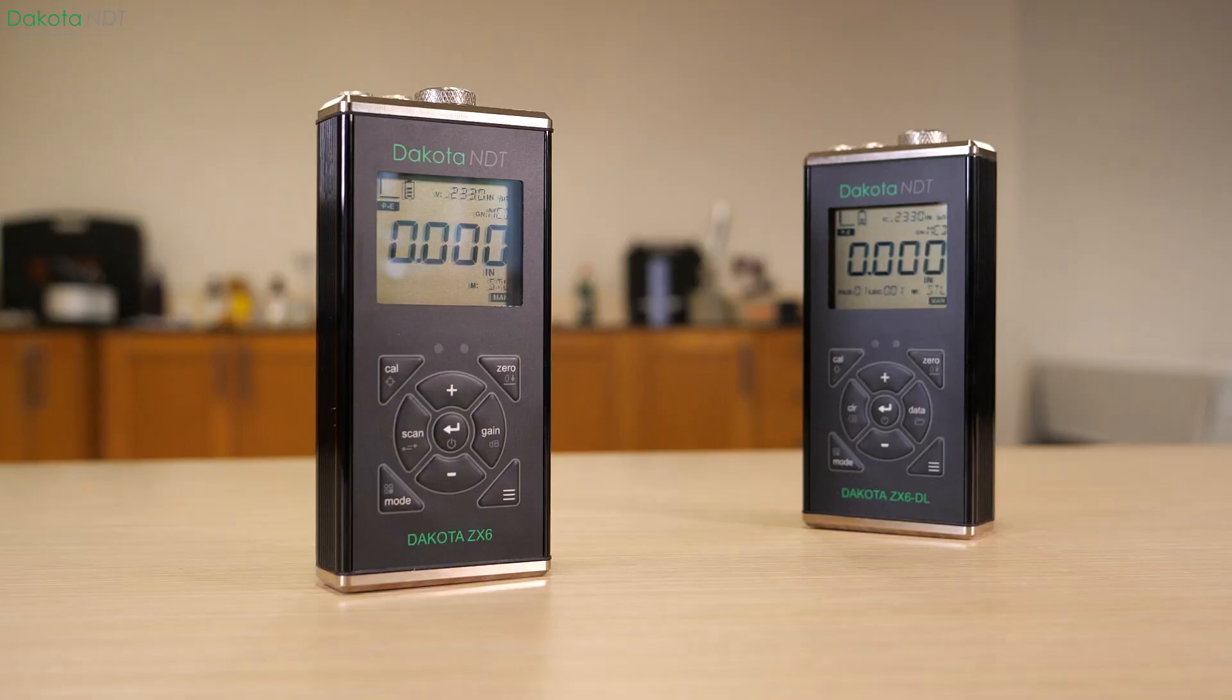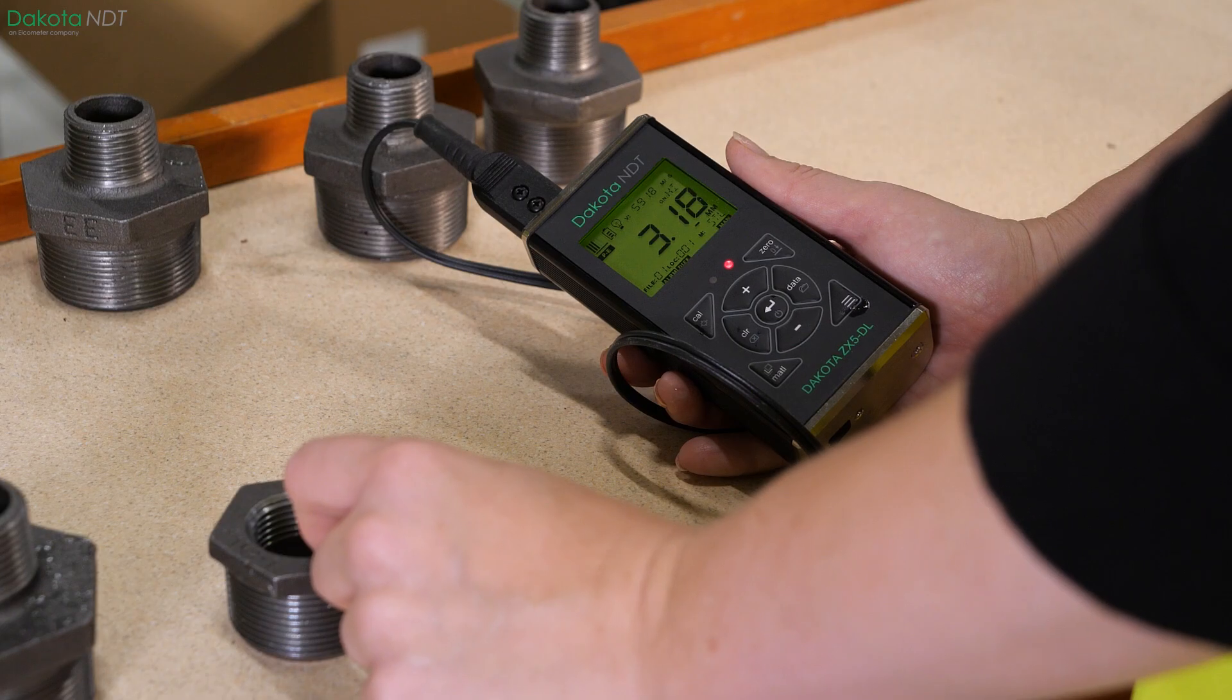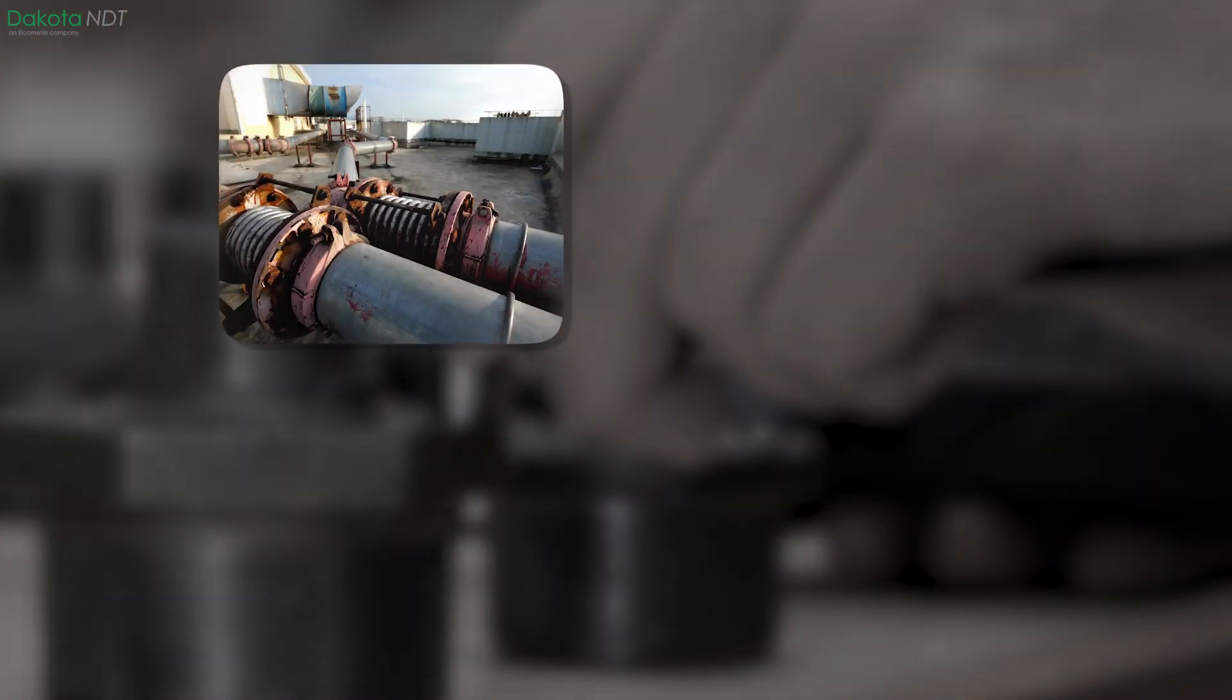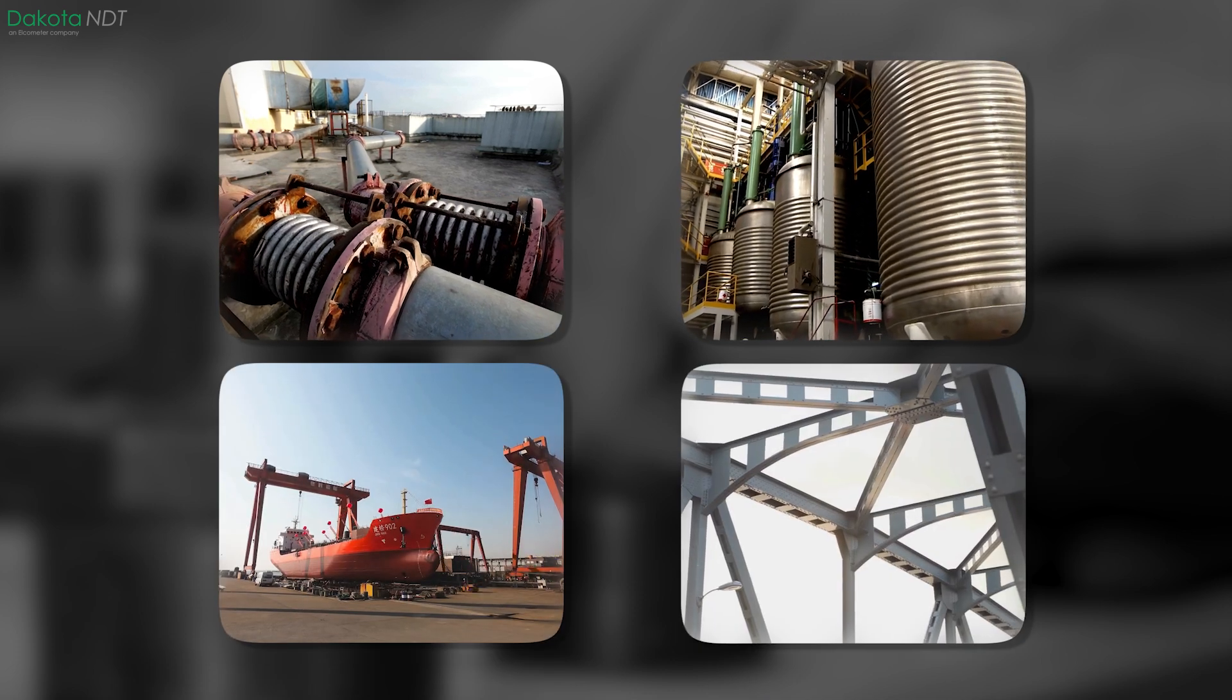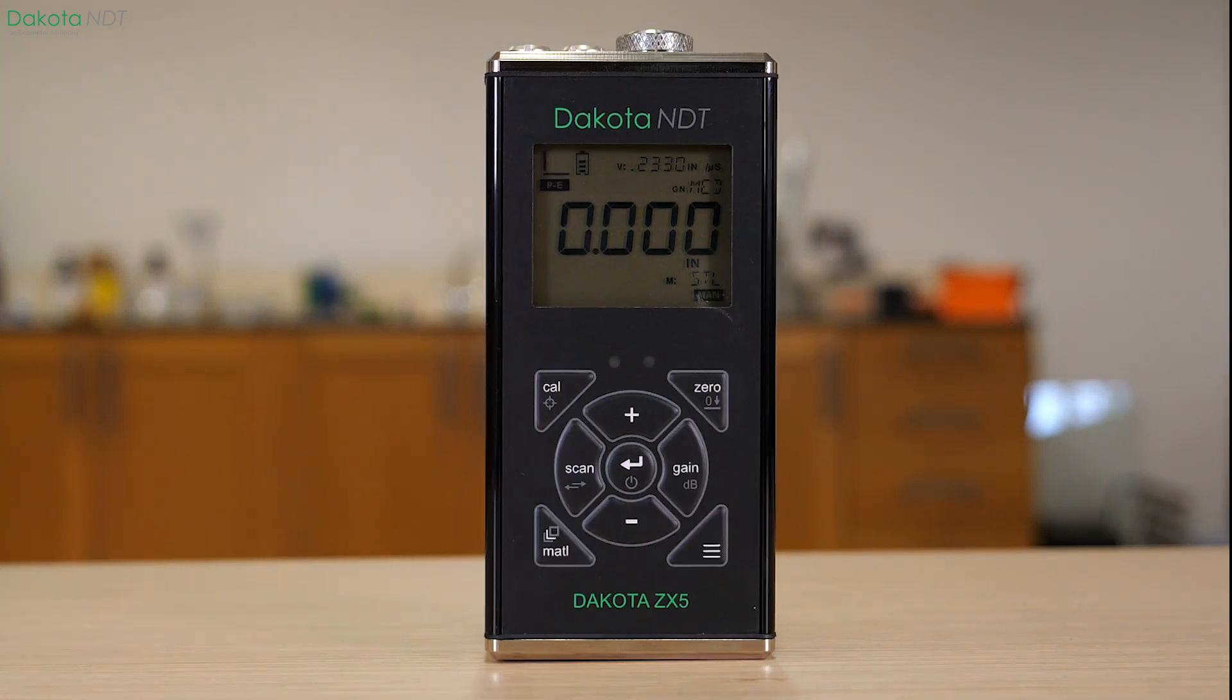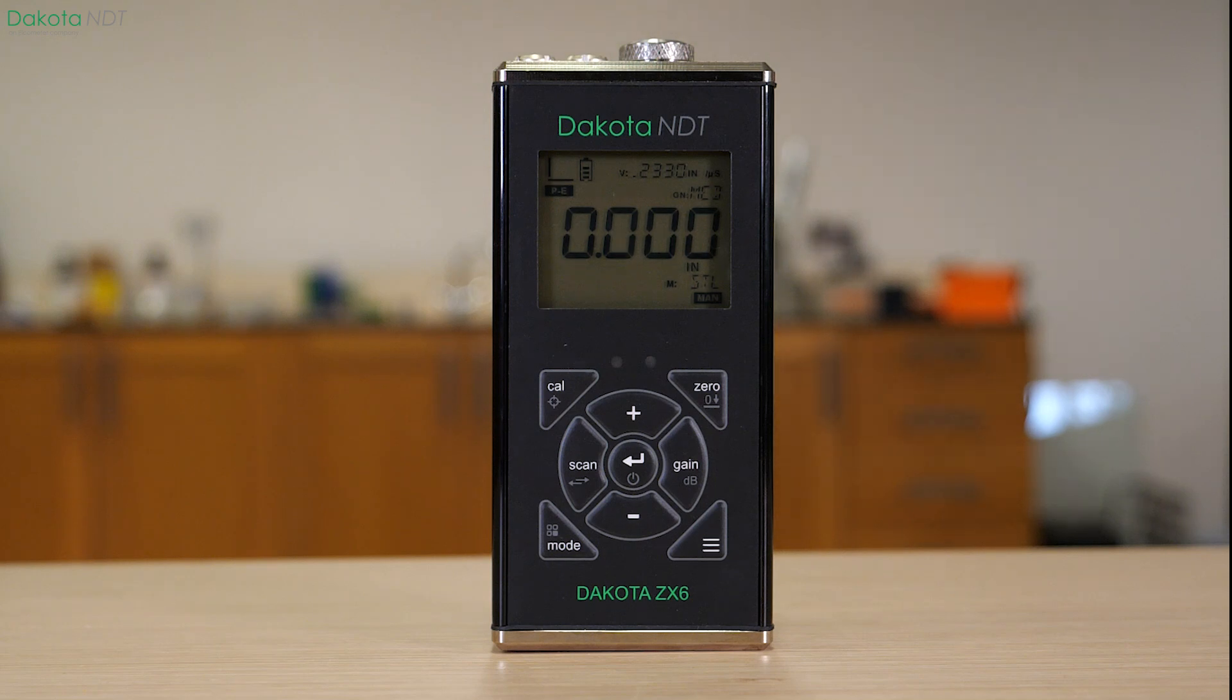Ultrasonic thickness and corrosion gauges are designed to provide fast, accurate ultrasonic thickness measurements of coated or uncoated metal assets such as pipes, tanks, vessels, and structural supports. But which corrosion gauge best meets your needs for accurate and effective corrosion detection and prevention?